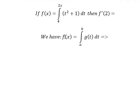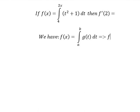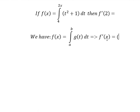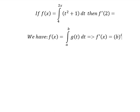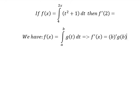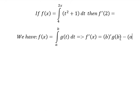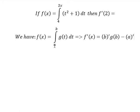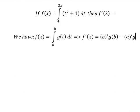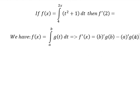If we do the first derivative f of x, we need to do the first derivative of b, and the value of b will change for t. Minus we do the first derivative of a, and the value of a will change for t. Now we can apply the formula here.